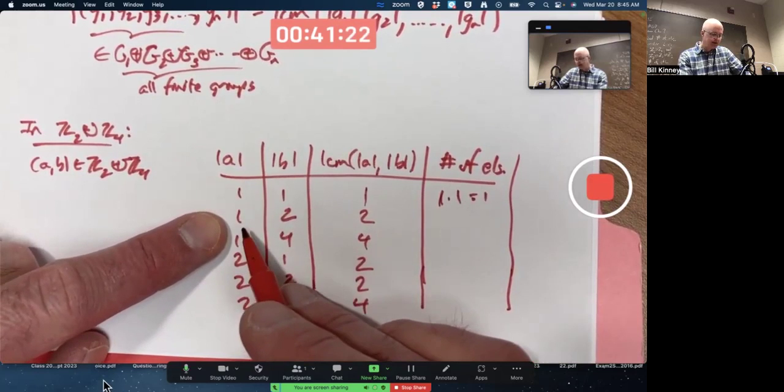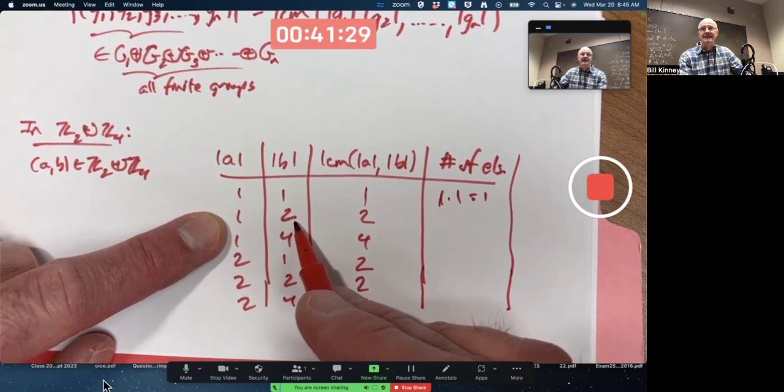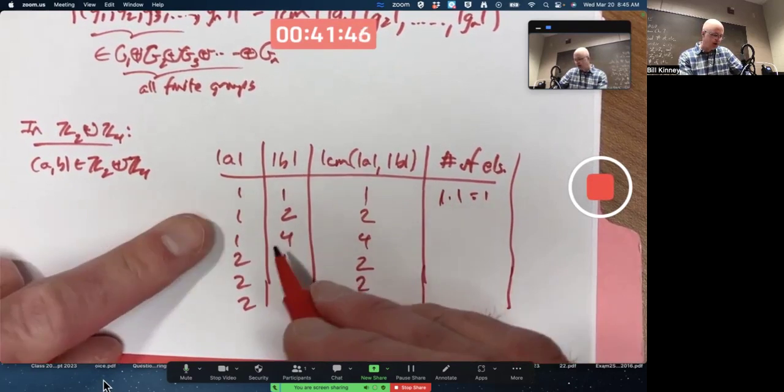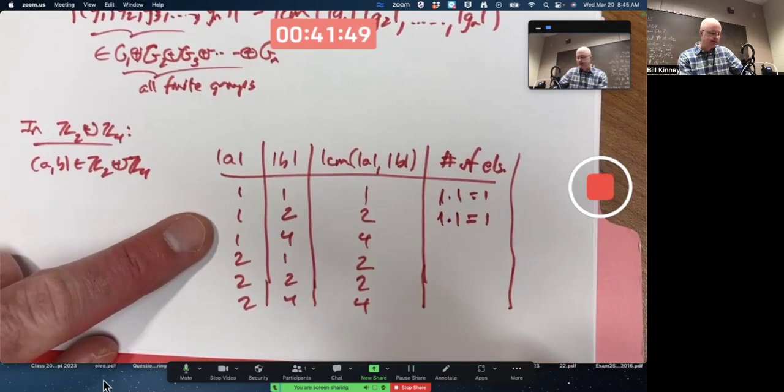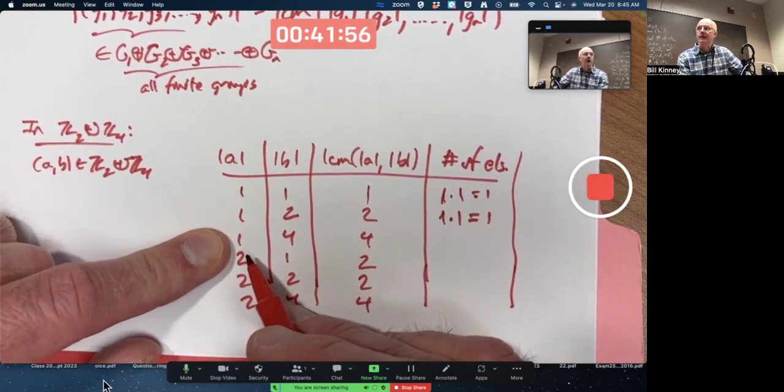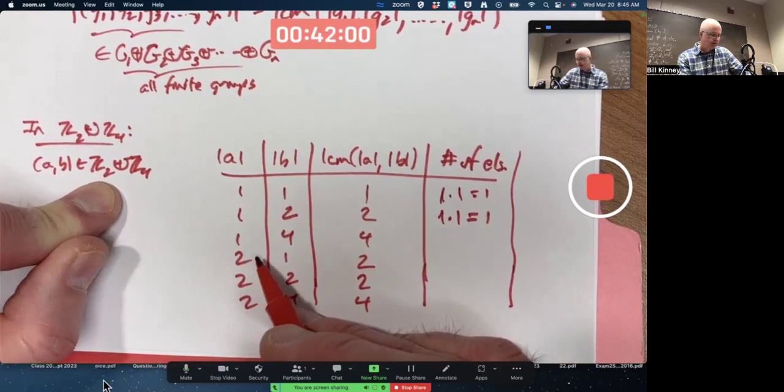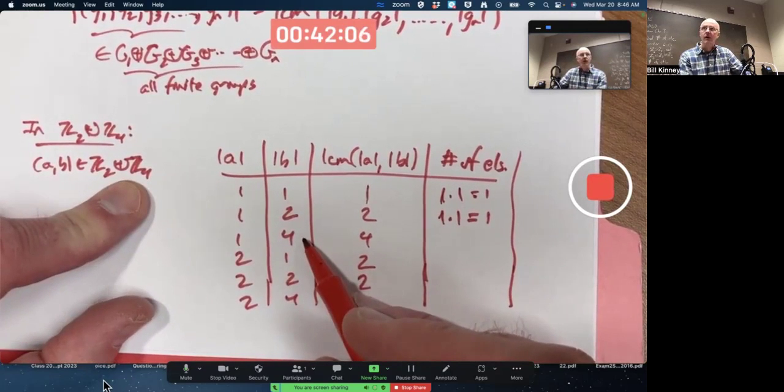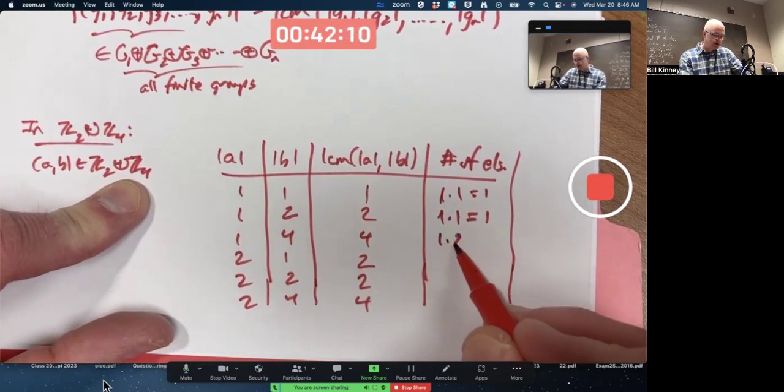Go to the next row. There's one possibility for A. A, in fact, it's got to be 0 if it's got order 1. There's also only one possibility for B. B has order 2 in Z4 means B has to be the number 2. Nothing else. Not 0, not 1, not 3. There's one possibility for each case. So there's one element that fits this pattern. Next row, once again, A has order 1. It's got to be the number 0 in Z2. B has order 4. There's two possibilities for B to have order 4. In Z4, it could be 1 or it could be 3. There's 1 times 2, two possibilities.